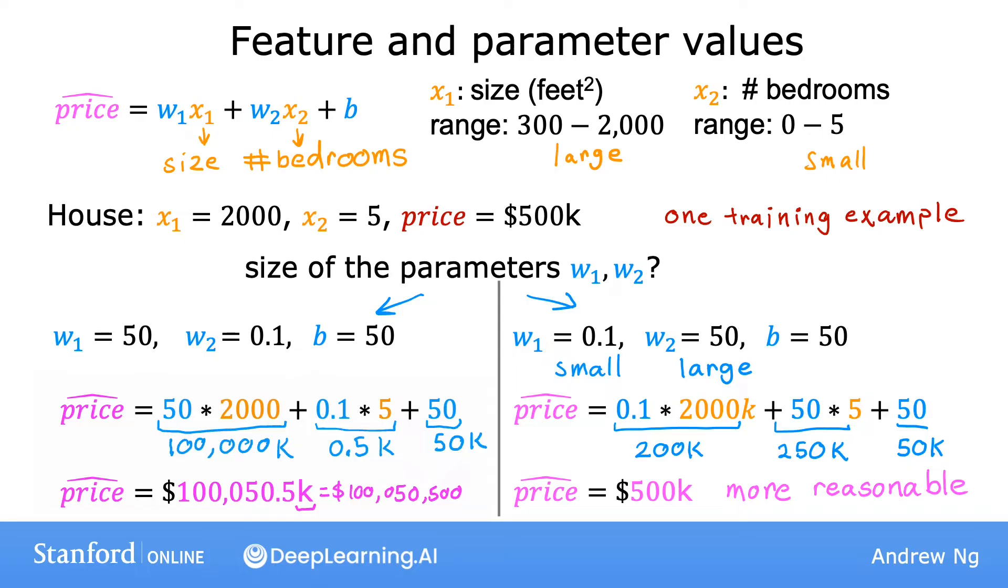Hopefully you might notice that when a possible range of values of a feature is large, like the size in square feet which goes all the way up to 2000, it's more likely that a good model will learn to choose a relatively small parameter value, like 0.1. Likewise, when the possible values of a feature are small, like the number of bedrooms, then a reasonable value for its parameters will be relatively large, like 50.